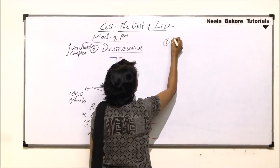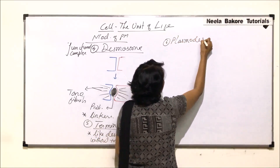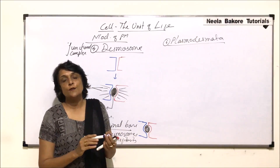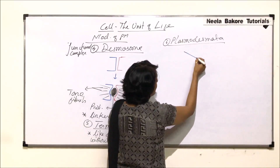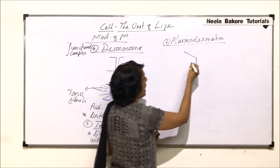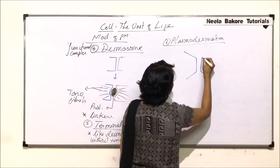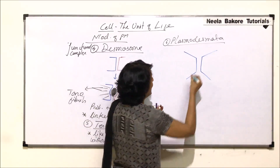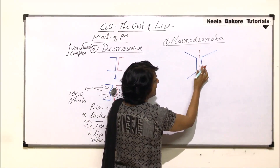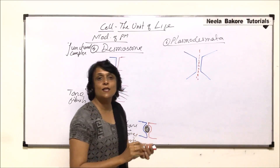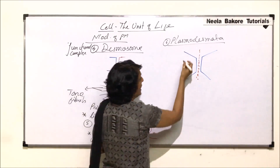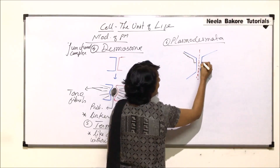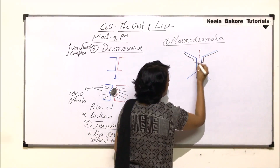The sixth modification is plasmodesmata. Plasmodesmata are found in plant cells. Drawing two plant cells — one half of one cell and the other cell — the middle part between them is the middle lamella. The blue lines represent the primary cell wall. If there is a secondary cell wall deposition, there are areas where the secondary wall is not deposited.